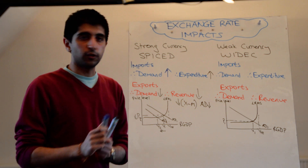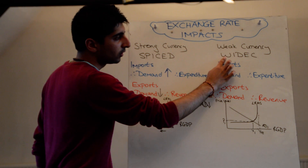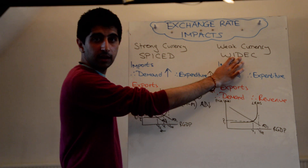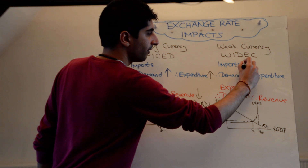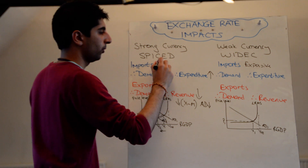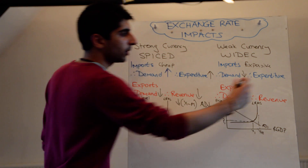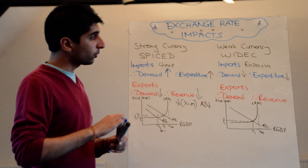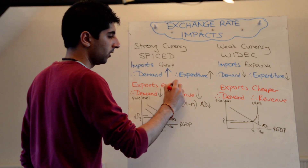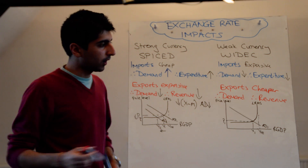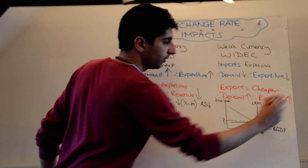The opposite happens for a weak currency. So if a currency depreciates, gets weaker, falls in value, then we go to WIDEC — which is the opposite of SPICED. W is weak currency, or weak pound, makes imports dear and exports cheap. So imports now become expensive, meaning the demand for imports is going to decrease and the money we spend on imports is going to decrease. Whereas for exports, they now become cheaper, so demand for exports is going to increase, and the revenue brought in from export sales is likely to increase because we can sell more as a benefit of this lower price.